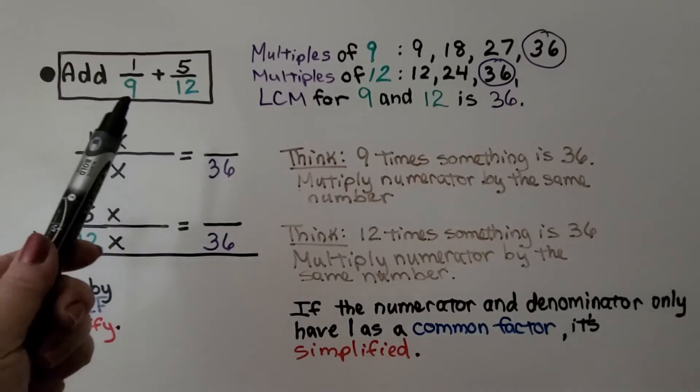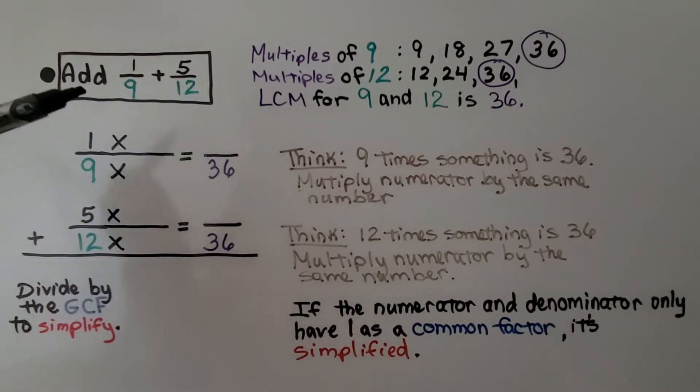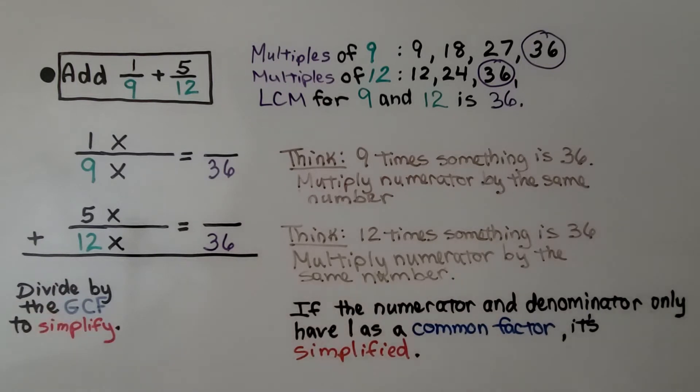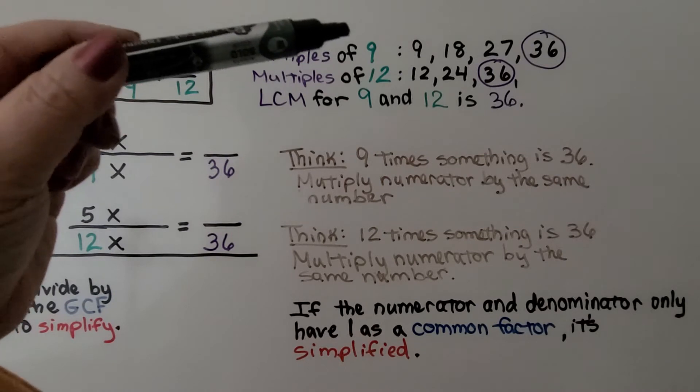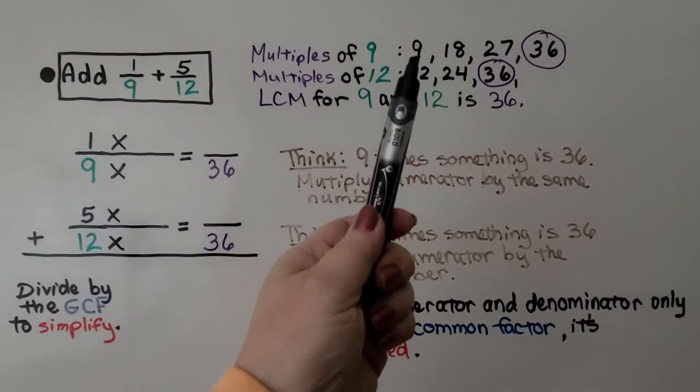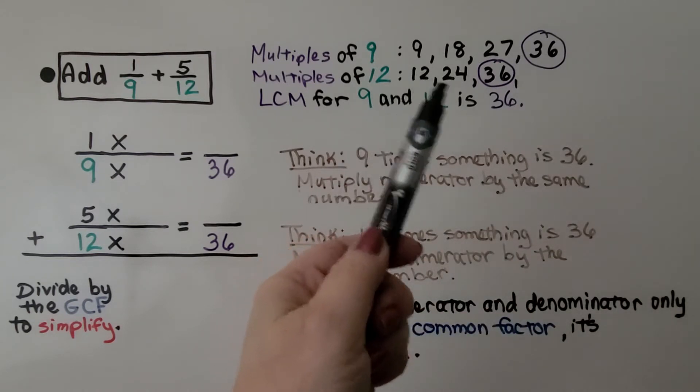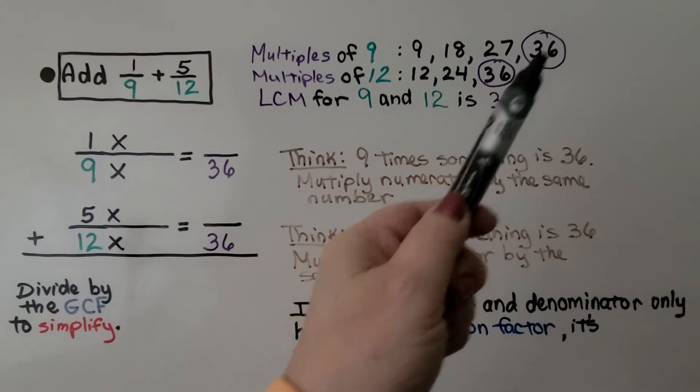Here we need to add 1/9 + 5/12. Now if you notice, they've got it going across like a sentence and I'm stacking them. It's easier when you stack them to find the common denominator because then we can multiply and add them. So we have 1/9 + 5/12. The multiples of 9 are 9, 18, 27, 36. The multiples of 12 are 12, 24, 36. So the least common multiple is 36.